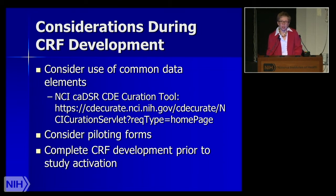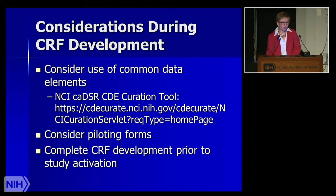Consider using common data elements — NCI has done a lot of work building a repository of commonly used common data elements that we strongly suggest research programs and investigators use. We want to see common data elements across trials. We also encourage piloting forms amongst a few of your outlying sites or research staff to see if they make sense and are capturing the information you're interested in. Complete CRF development prior to study activation — it's really important. CRF forms also help to inform the research site about how complex and detailed the study will be and help them decide what kind of staffing to allocate.